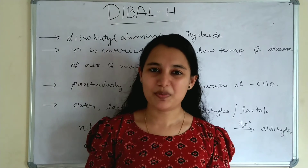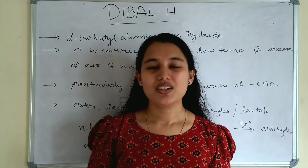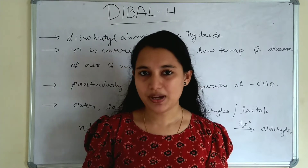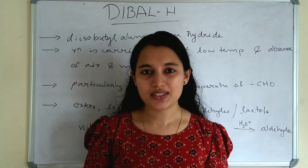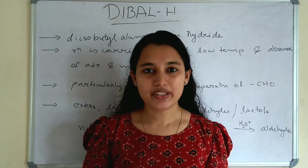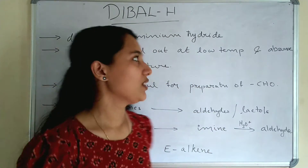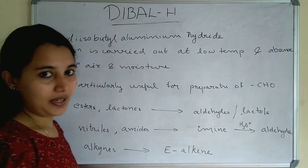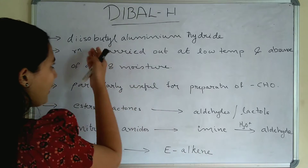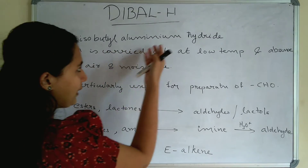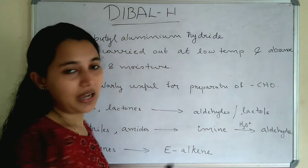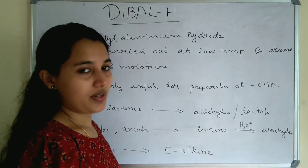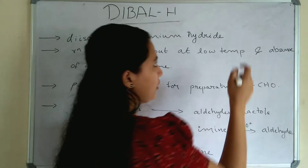Hi friends, welcome to Chemicals Academy. So today's video is about DIBAL-H. DIBAL-H is a reducing agent. So what is the full form of DIBAL-H? Di-isobutylaluminium hydride. So we can write the structure.